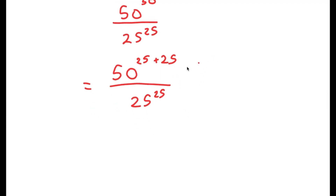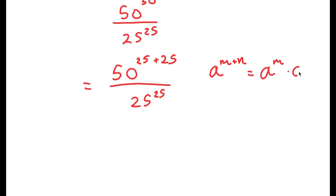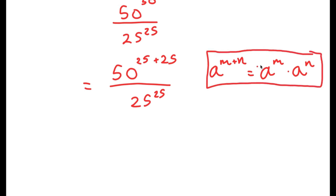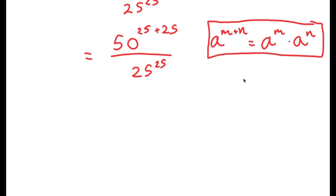The reason I rewrote 50 to the power of 50 as 50 to the power of 25 plus 25 is because now I can use an exponential property that states: if I have something in the form a to the power of m plus n, this is equal to a to the power of m times a to the power of n. I would highly recommend that you memorize this, because it can also be used later in math.